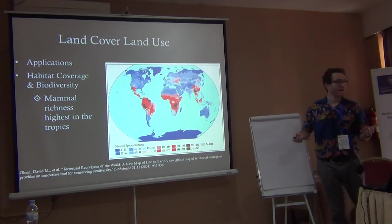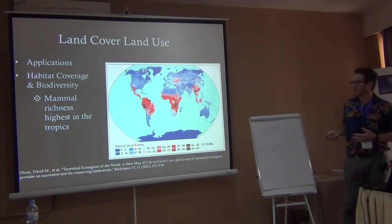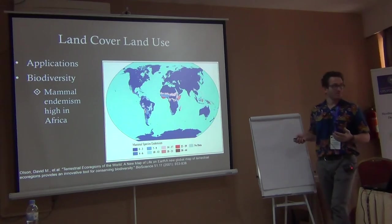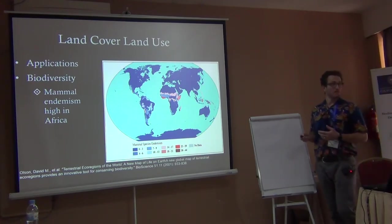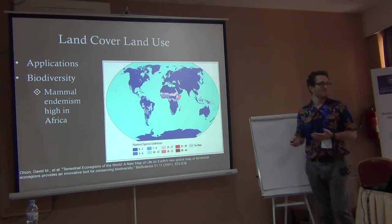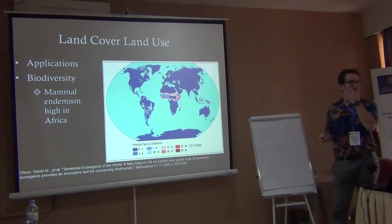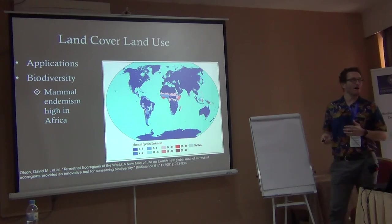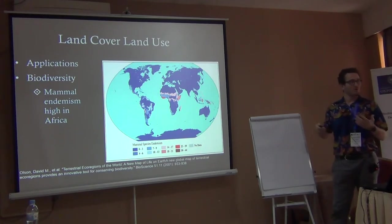Habitat coverage uses specific habitat and forest types, savanna and grassland types to predict mammal species distribution — highest in the tropics, with high mammal endemism in parts of Africa, using just land cover habitat types. But even though this is published and peer-reviewed, we should always question whether it's accurate and where these numbers are coming from.